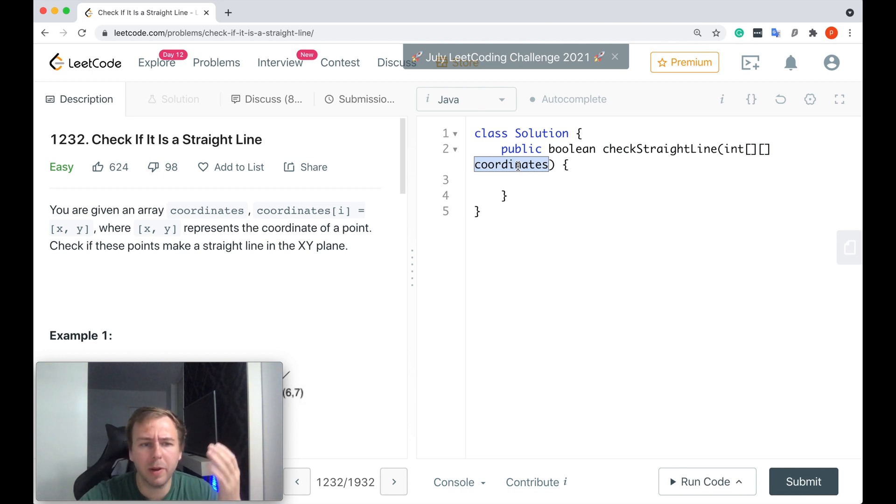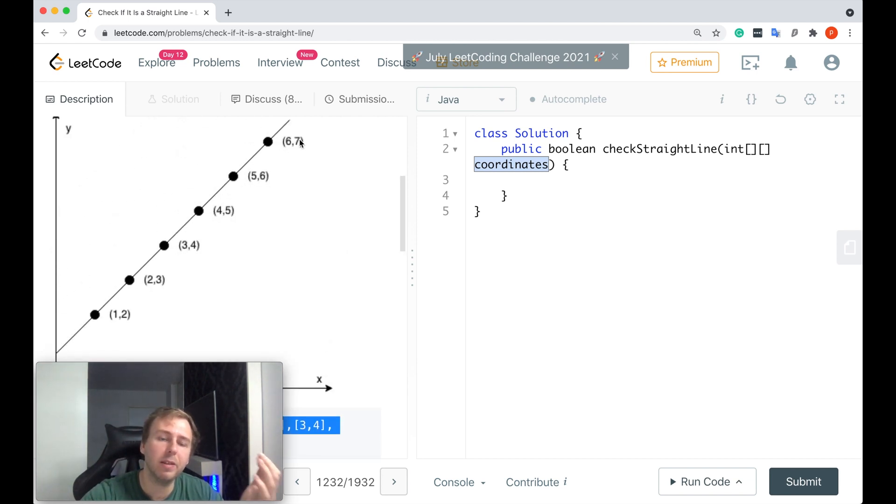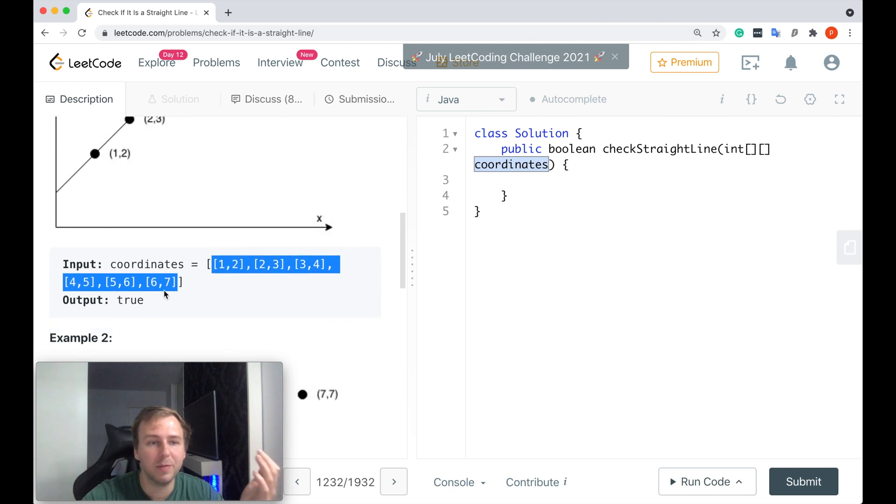Basically we are given an array of some xy points and we need to check if these points make a straight line in the xy plane. Here's an example. These are our xy points and if you plot a graph based on these points you can see that you will get a straight line. That's perfect - if you get a straight line, return true.